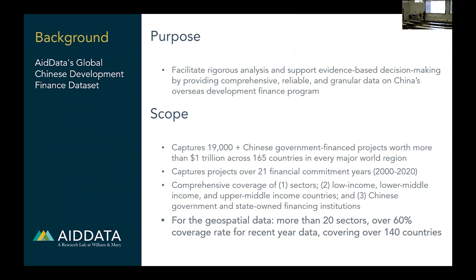For the first five years of the Belt and Road Initiative, annual official commitments combined were about $85 billion US dollars per year — roughly a two-to-one ratio compared to the United States. Throughout our ongoing efforts covering the years 2000 through 2020, we have more than 19,000 projects in our dataset, with a total amount easily exceeding one trillion US dollars, across 165 lower and middle-income countries in nearly every major world region.